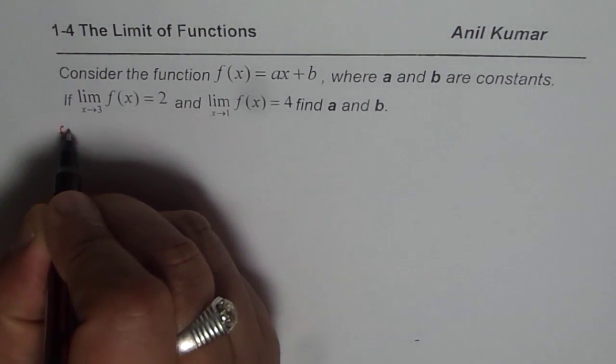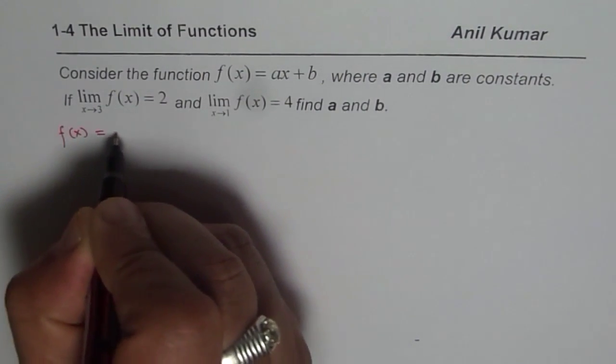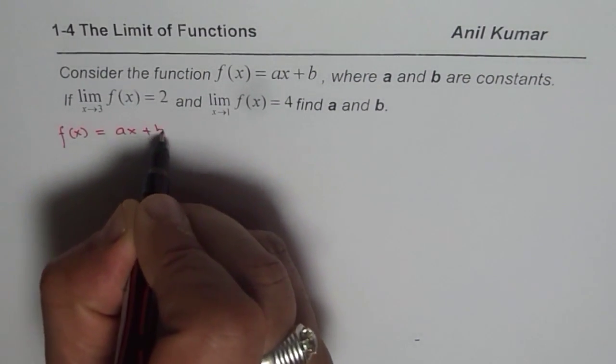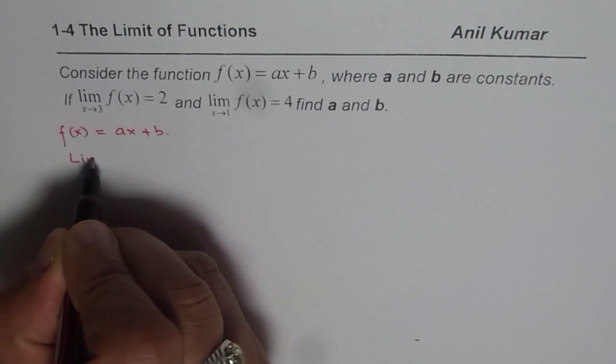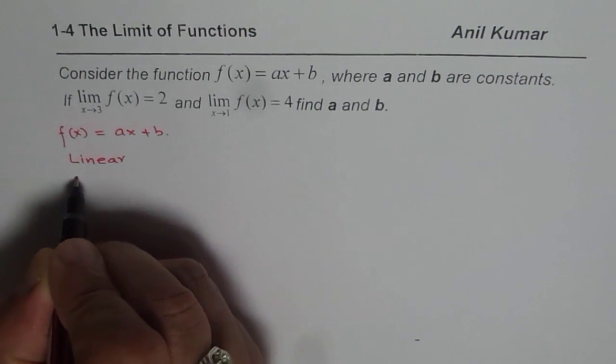So what we are given here is the function f(x) equals ax plus b. We know this is a linear function, correct? And we also know it is continuous.